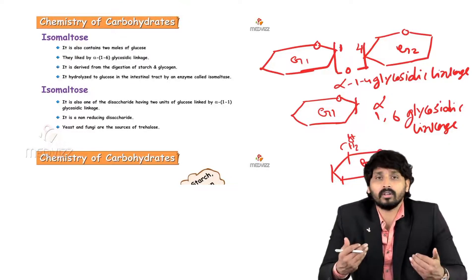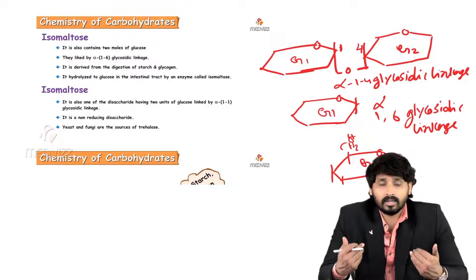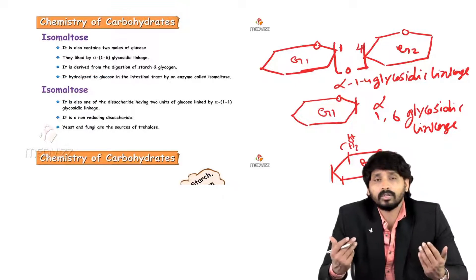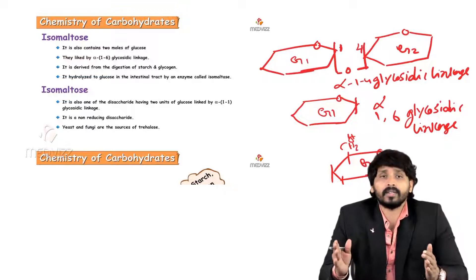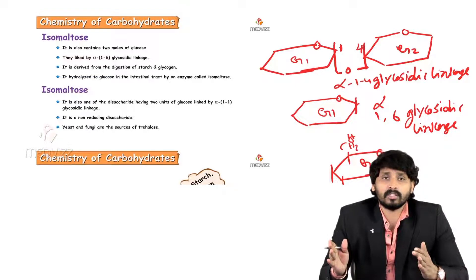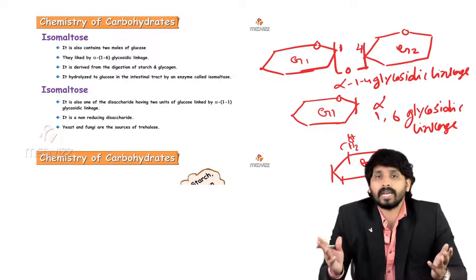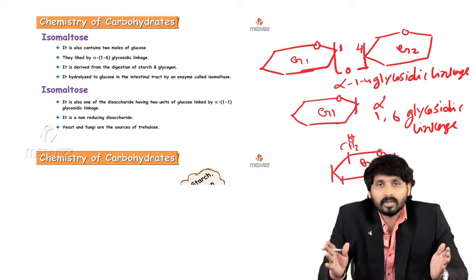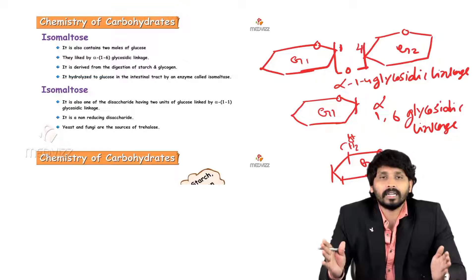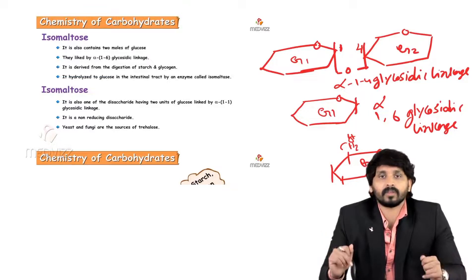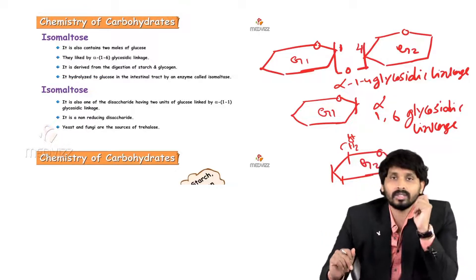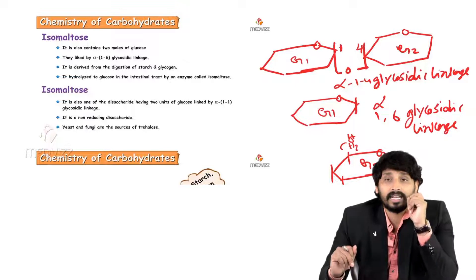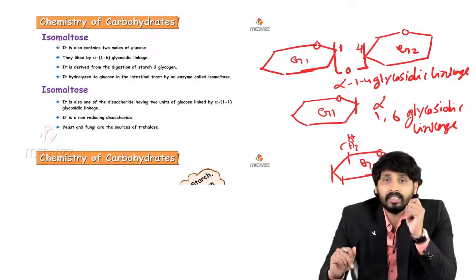And this is the derivative product of, that means partial hydrolyzed, like when starch or glycogen hydrolyzed or broken down, it's one of the intermediate in this digestive process. Isomaltose. Because starch and glycogen are highly branched and this alpha one six glycosidic linkage you can get it only in branching. So it is hydrolyzed to glucose in intestinal tract by enzyme isomaltase. This enzyme present in the intestine.